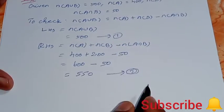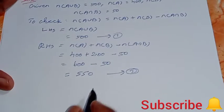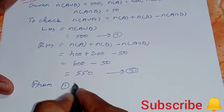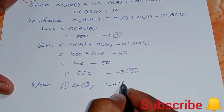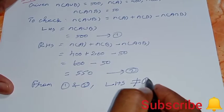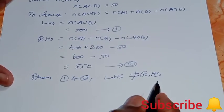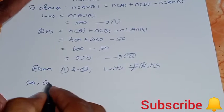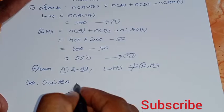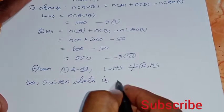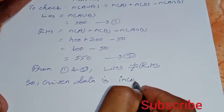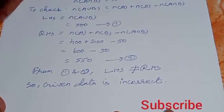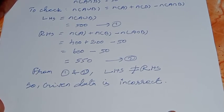The two answers equal or not? So from 1 and 2, LHS is not equal to RHS. Left side and right side are not equal. So given data is incorrect. Given data is incorrect. That's all, this is over. Thank you.